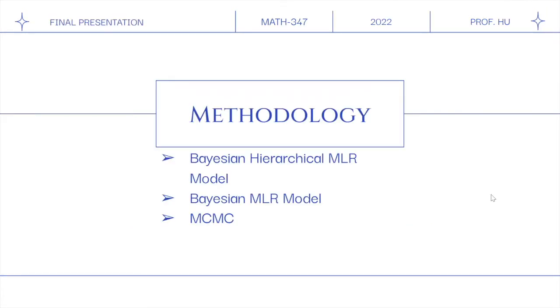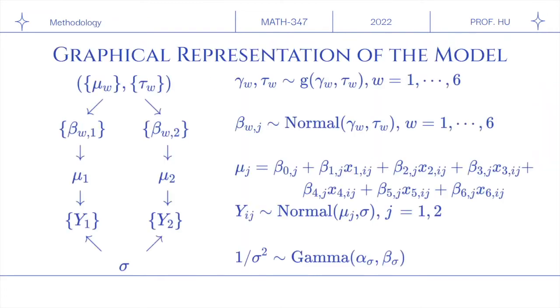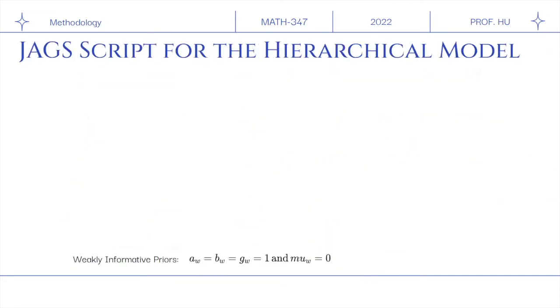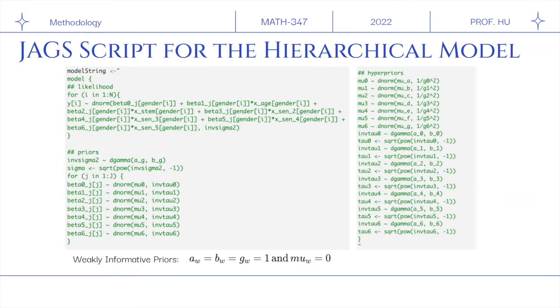We actually did two Bayesian models, the first being a hierarchical MLR model, and I will just be going over the JAGS script, but feel free to pause the previous two slides. Basically, we are modeling each observation, y_ij,